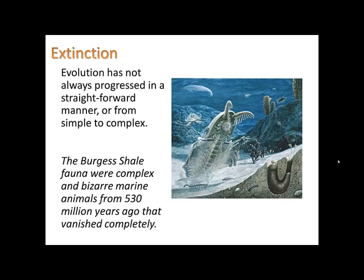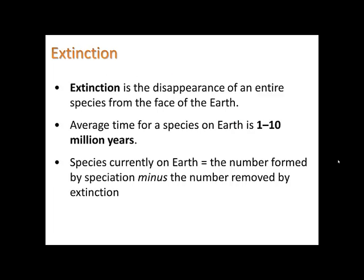Throughout history there have been periods of extinction, and evolution has not always progressed in a straightforward manner from simple to complex. There is a layer of rock called the Burgess Shale where complex and bizarre marine animals from 530 million years ago vanished completely. By extinction we mean the disappearance of an entire species from the face of the Earth. There's also a related term, extirpation, where a species disappears from one location on Earth. The average lifespan of a species seems to be about one to ten million years, and only a few percent of all species known from fossil records are still alive today.